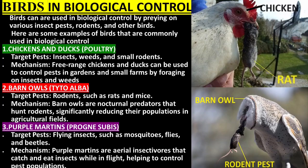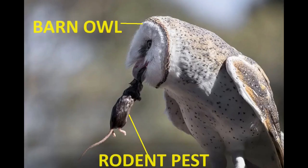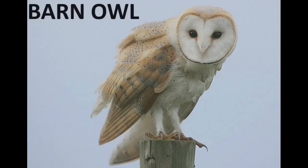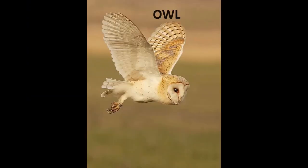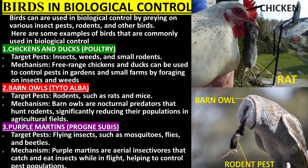Birds in biological control: birds can be used in biological control by preying on various insect pests, rodents, and other birds. Barn owls: commonly targeted pests are rodents, such as rats and mice. Barn owls are nocturnal predators that hunt rodents, significantly reducing their populations in agricultural fields.